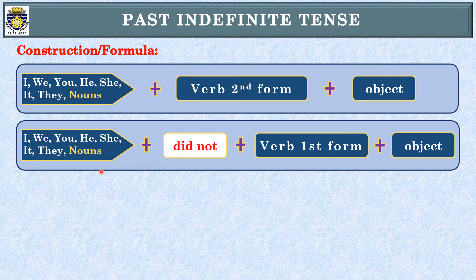If we make an interrogative sentence — whether negative interrogative or simple interrogative — we take 'did', which we call the helping verb, and place it at the start of the sentence, then put a question mark at the end. So this is the formula for simple, negative, and interrogative sentences.